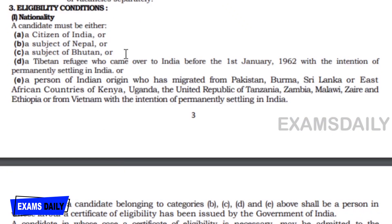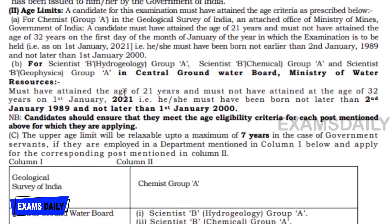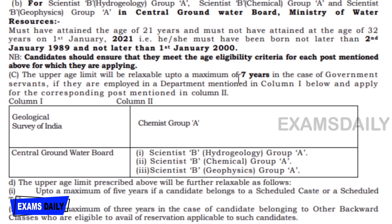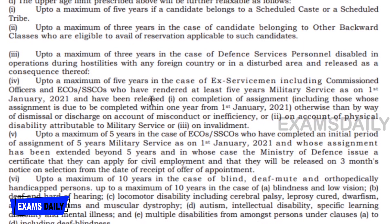Eligibility: You must be a citizen of India. The minimum age is 21 years and the maximum age is 32 years for all posts. Age relaxation is up to 7 years for government servants, 5 years for SC/ST candidates, 3 years for OBC candidates, 3 years for defence personnel disabled in operations, and 5 years for ex-servicemen and ECOs/SSCOs who have completed their initial period.